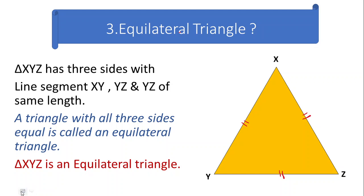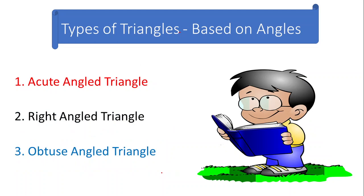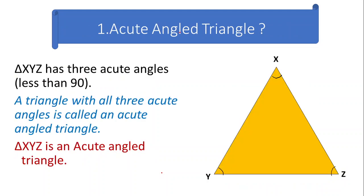After seeing the classification based on sides, let's see what is the classification based on angles. Based on angles, we have three different types of triangles: an acute angle triangle, a right angle triangle, and an obtuse angle triangle. In an acute angle triangle, all three angles have to be acute — meaning each angle measures less than 90 degrees, with values in between 0 and 90 degrees. A triangle having all three angles as acute angles is called an acute angle triangle.